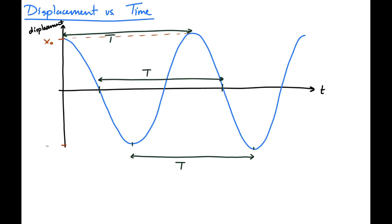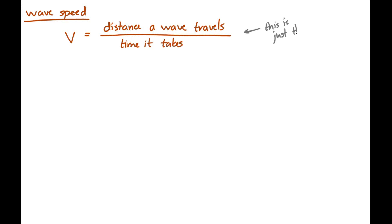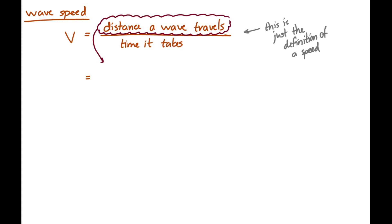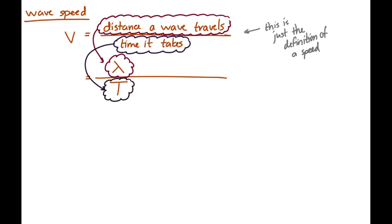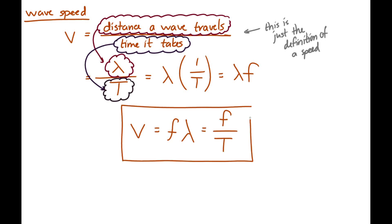Wave speed is the distance that the wave travels divided by the time it takes. If we consider the wave traveling one wavelength, the time to travel that distance is one period. So wave speed equals wavelength divided by period. Rearranging, wave speed also equals frequency times wavelength: v = fλ = λ/T. That equation is in your data booklet, and we'll get a lot of mileage out of it.